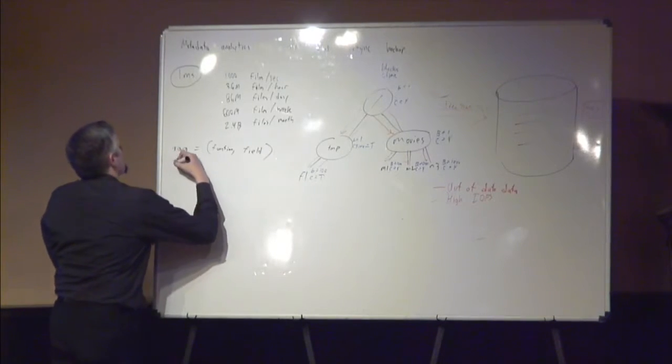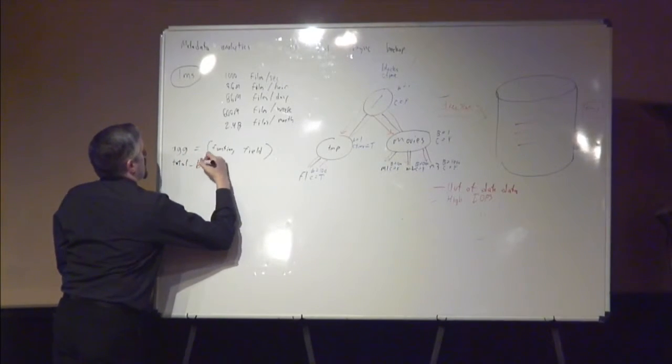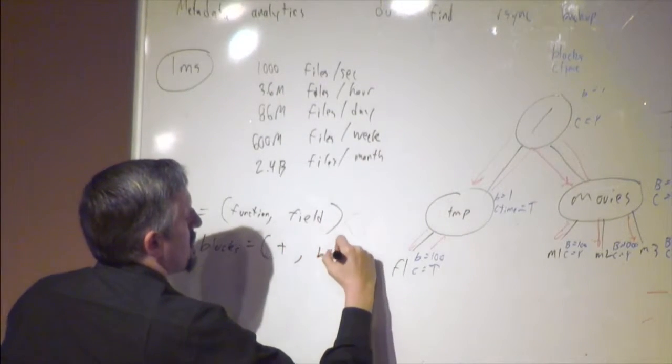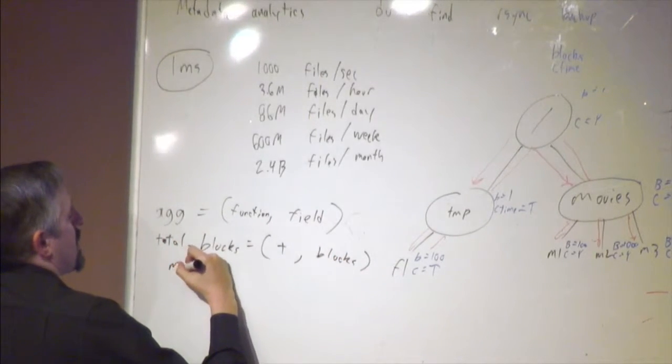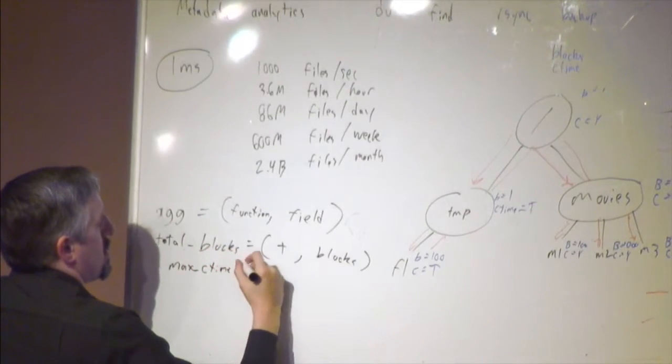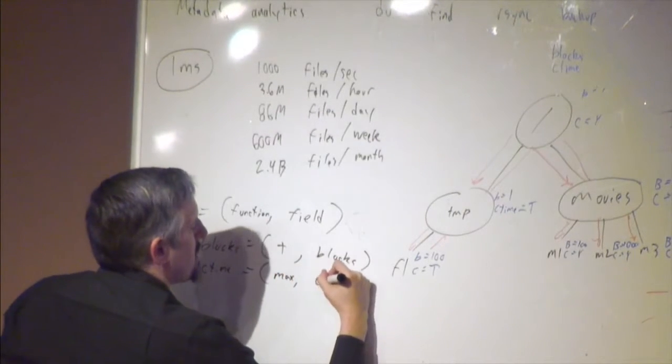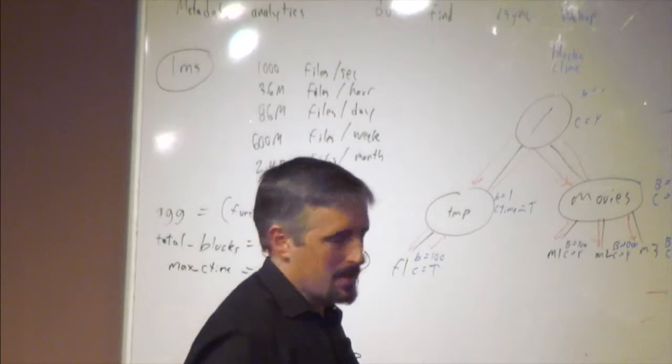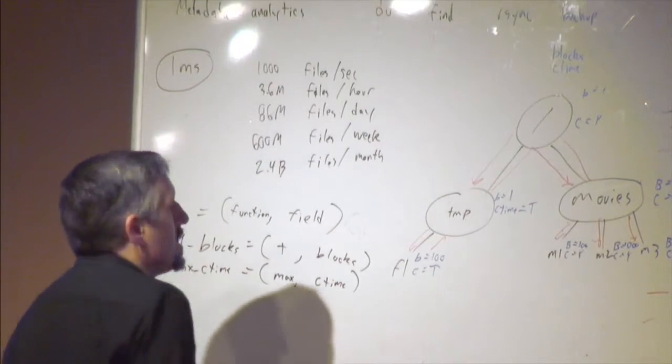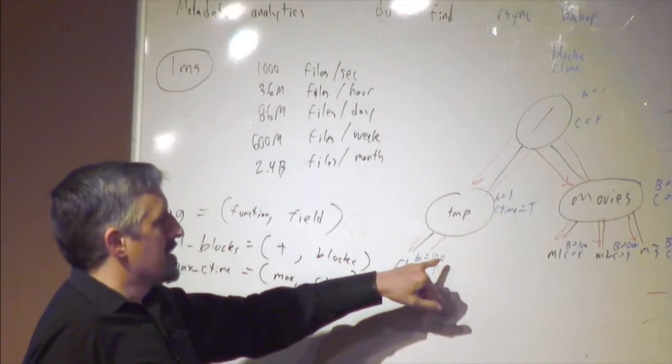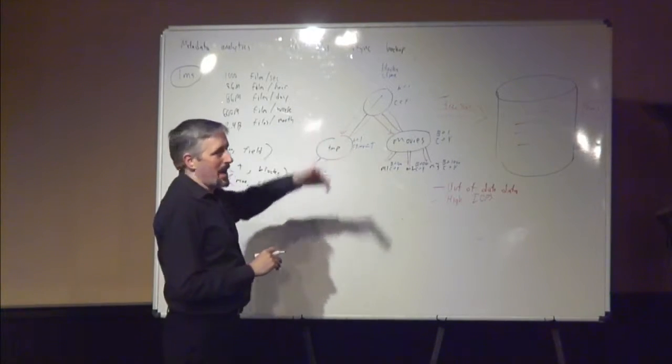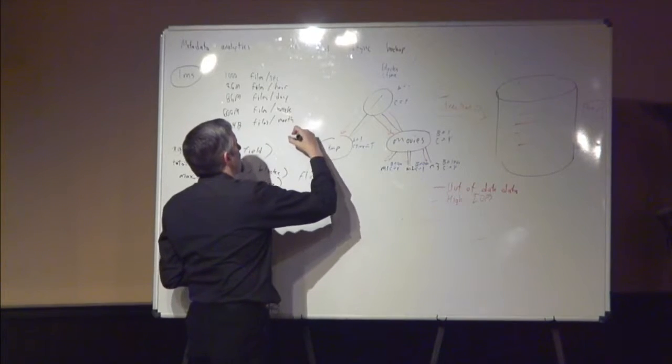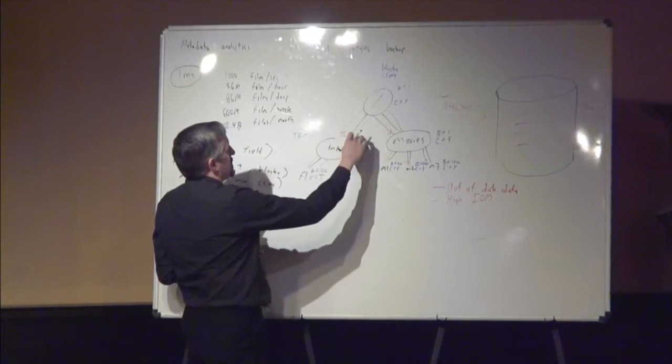An aggregate is a function on a field. For example, total_blocks as an aggregate would equal the plus function on the field blocks. We may have a max_ctime aggregate, which would be the max function on the ctime field. Going back to this picture, individual files - the aggregates on the fields are the same as the fields since there's only one item. But the directories end up having interesting aggregates.